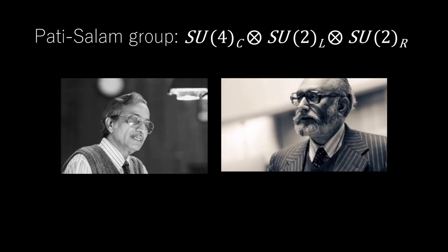The Patti-Salam model is a grand unification theory proposed in 1974 by Abdus Salam and Jogesh Patti. The unification is based on the existence of four quark color charges, instead of the conventional three, the new quark being identified with leptons.